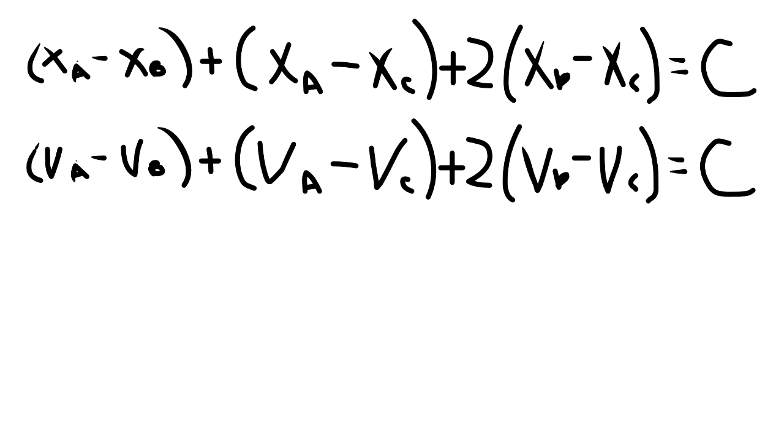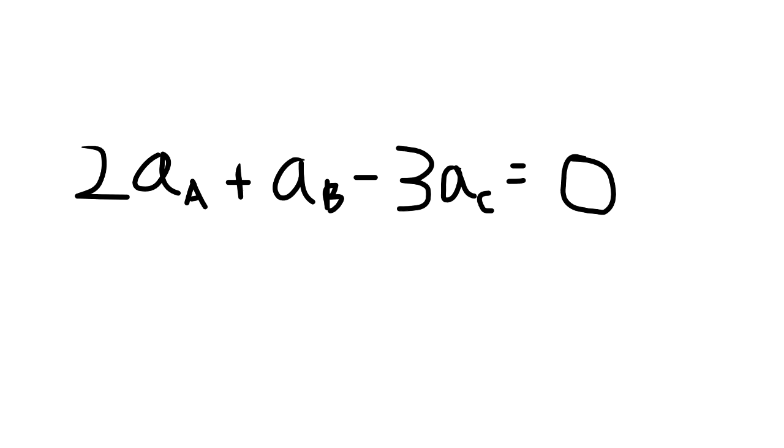Differentiating this equation twice to obtain the accelerations, simplifying yields 2 A sub A plus A sub B minus 3 A sub C equals 0. We now have an equation that relates all three accelerations of each component of the figure. Since we already know A sub A and A sub B, we can plug these into the equation to obtain A sub C. Now we have our final answer.